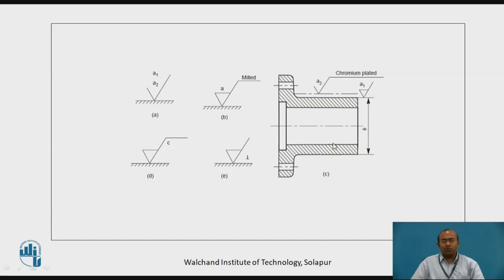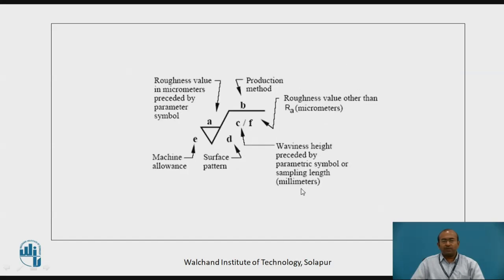This is one of the examples how these symbols are shown. This is the symbol which is used for outer surface and likewise. Now let us go with the next important surface roughness symbol which carries full of information. This is the triangle, equilateral triangle, extended line, leader line.